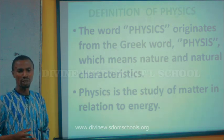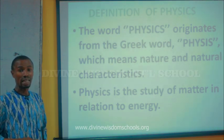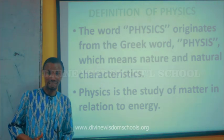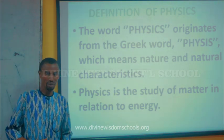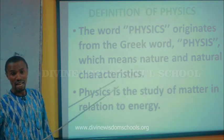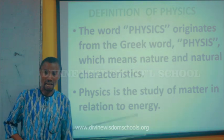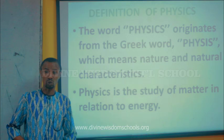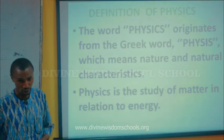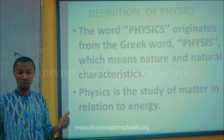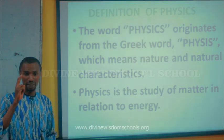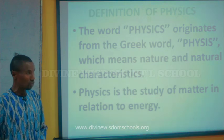The word matter, as we know from your previous lesson, can be defined as anything that has mass and occupies space. Then the other key word, which is energy, can be defined as the ability to do work or the capacity to perform work. Take note that in the definition of physics, the words matter and energy are very key.